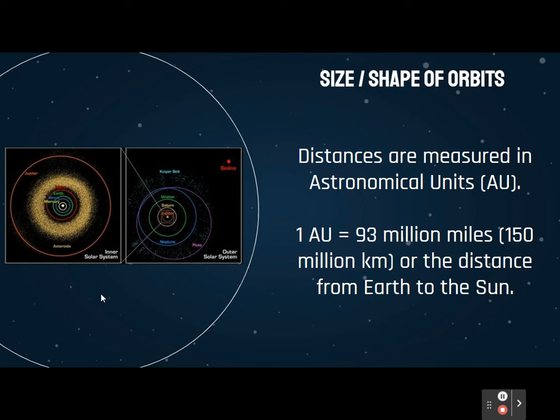Space distances are really, really far apart. We measure them in astronomical units, or AU. One astronomical unit is about 93 million miles, or 150 million kilometers, which is the distance from Earth to the sun. So one astronomical unit is the distance from Earth to the sun.